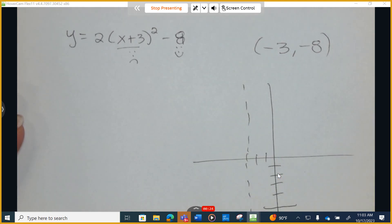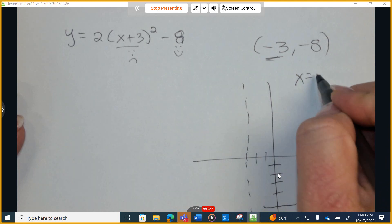That means what is the equation of the axis of symmetry? It is x equals negative 3.